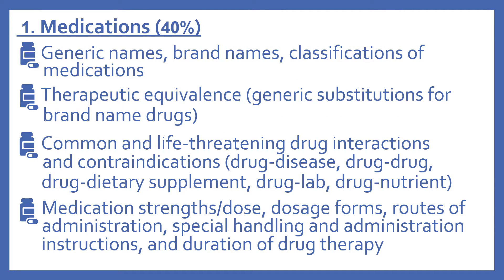The medications portion is about 40% of the test. This includes generic names, brand names, and classifications of medications. It includes information about therapeutic equivalence, which deals with generic substitutions for brand name drugs. Common and life-threatening drug interactions and contraindications, which includes drug-disease, drug-drug, drug-dietary supplement, drug-lab, and drug-nutrient interactions. It also includes information about medication strengths and dose, dosage forms, routes of administration, special handling and administration instructions, and duration of drug therapy.